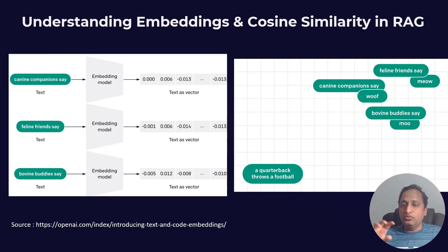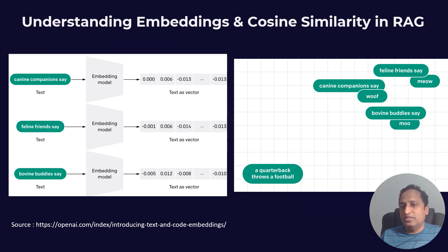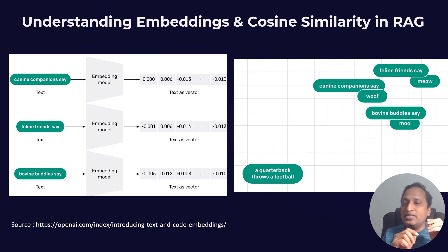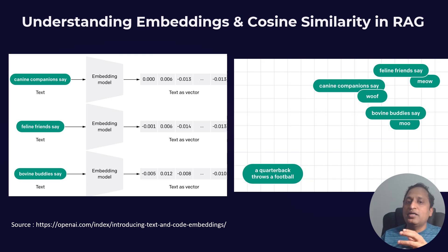Now let's zoom in on the two core concepts that power RAG systems: embeddings and cosine similarity. Embeddings convert words, sentences, or entire documents into high-dimensional numerical vectors that capture meaning — items with similar meaning have embeddings that are close in vector space. This allows a model to understand relationships between concepts beyond simple keyword matching. For example, the vectors for 'AI' and 'machine learning' might have a cosine similarity of 0.99, meaning they are highly related.